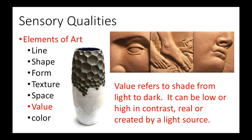Value refers to shade from light to dark. It can be low in contrast, such as in a painting of a foggy winter morning, or high in contrast, as in a photograph of a traditional chessboard. Contrasting value can be real, as in a vase that incorporates two different colors of clay, or created by a light source, as seen in examples of relief tiles.